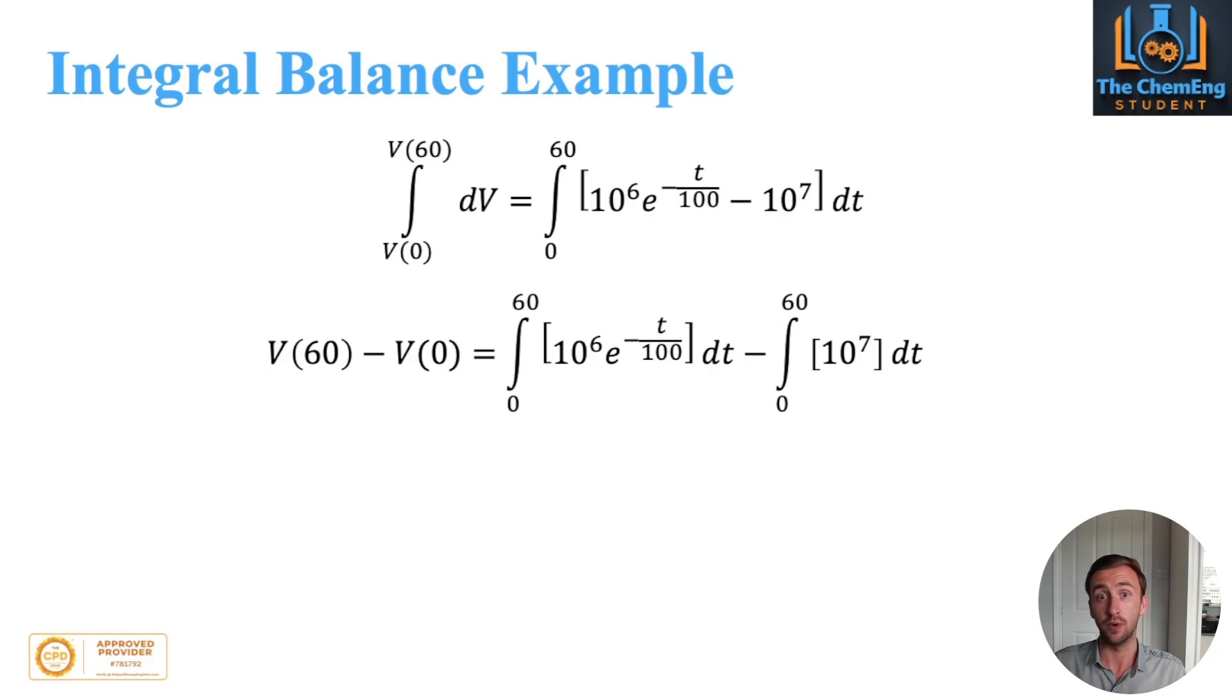Again, I'll put a link in the description if you are interested. So from here, what we could do is you will basically integrate these and you'll substitute in your upper and lower limits respectively. So you replace the t with zero and then with 60. Remember, it's your upper limit minus your lower limit.